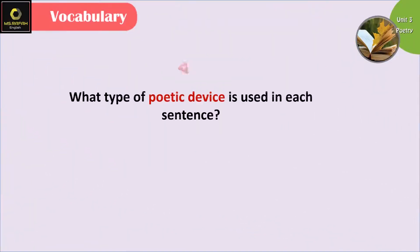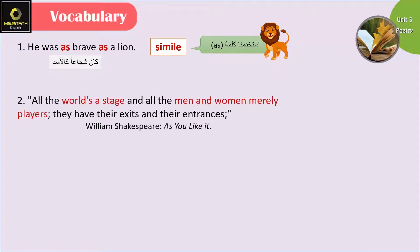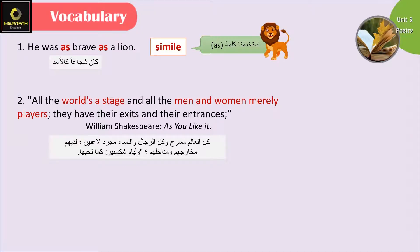Let's practice: what type of poetic device is used in each sentence? 'He was as brave as a lion.' في عنا كلمة as — معناها simile. 'All the world is a stage and all the men and women merely players; they have their exits and their entrances.' هون شبهنا العالم بإنه خشبة مسرح والرجال والنساء بإنهن لاعبين — استخدام غير حرفي لكلمة stage وكلمة players — so we have metaphor.